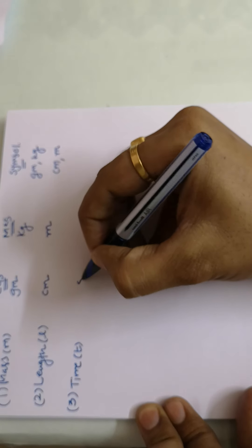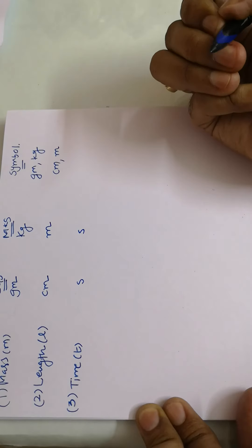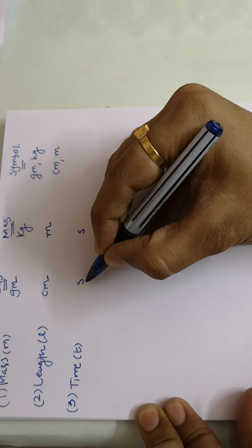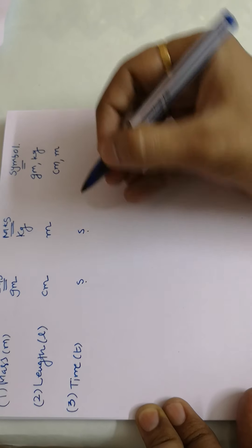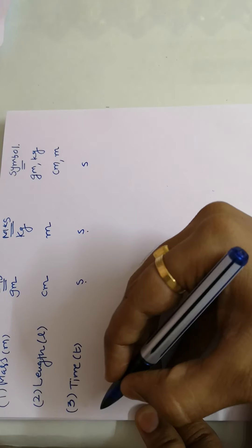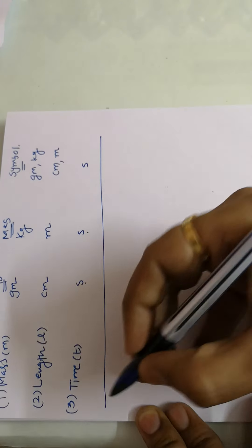The third one is time. Its unit in both CGS and MKS is called a second, and it is represented by the symbol 's'.